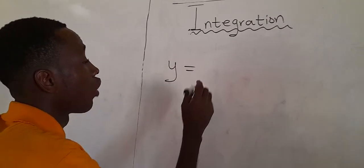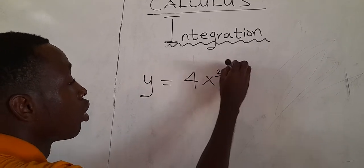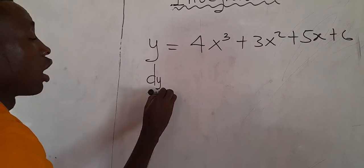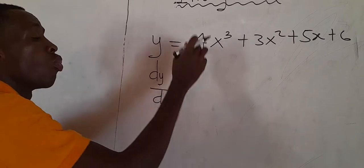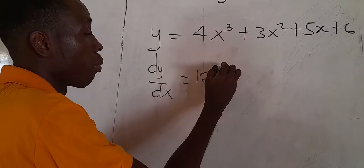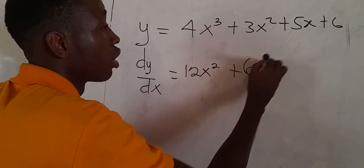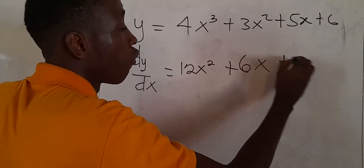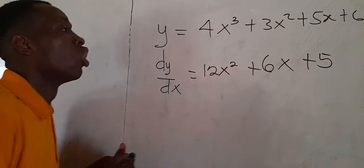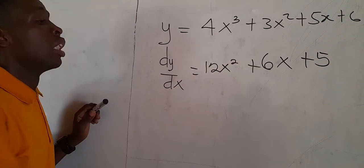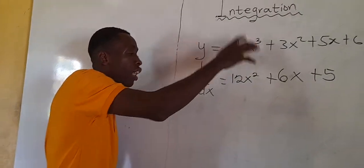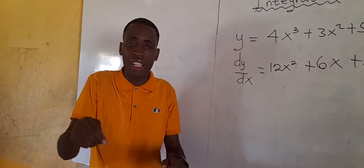Once we have a curve like y = 4s³ + 3s² + 5s + 6 and we are asked to find the gradient of this curve — that is dy/ds — we drop the exponent to multiply the coefficient of the variable. So 3×4 = 12, reduce the exponent by 1 to get 2; 3×2 = 6, reduce by 1 to get 1. The differentiation of a linear term is the coefficient of the variable, and the differentiation of a constant is 0. So this is the equation of the curve, and this is its gradient.